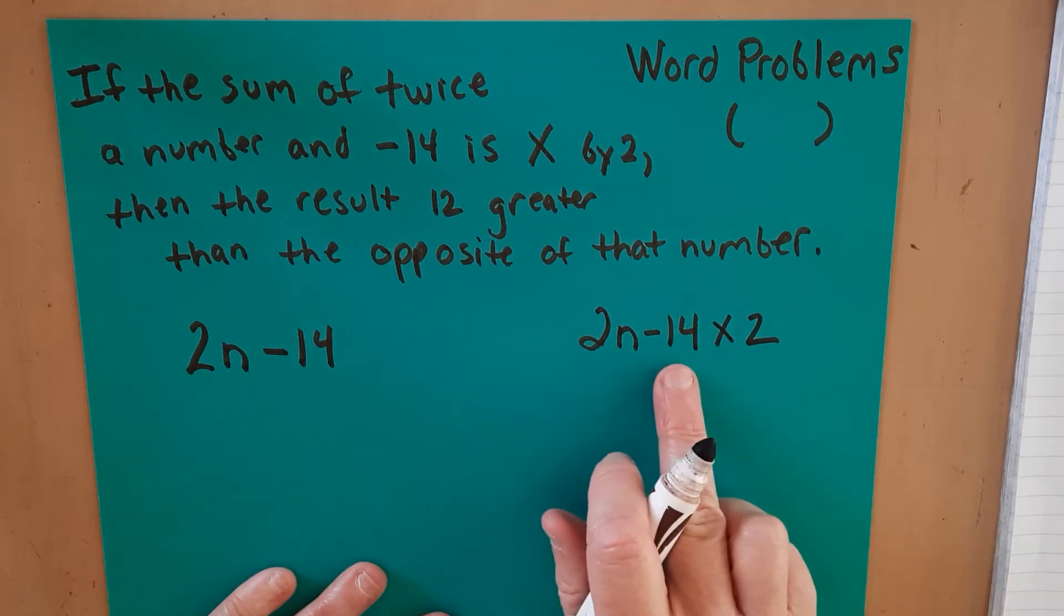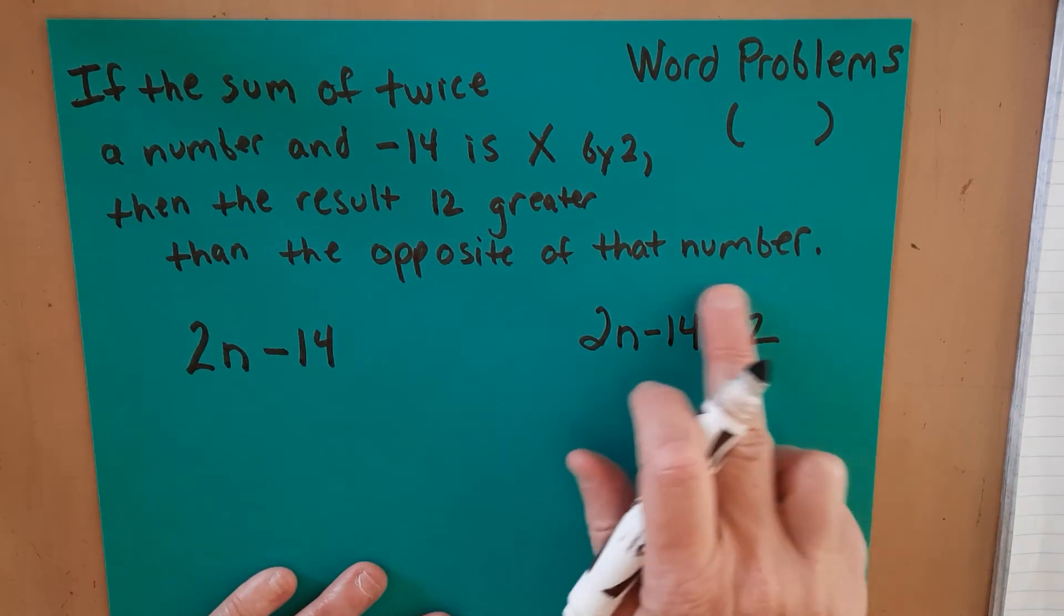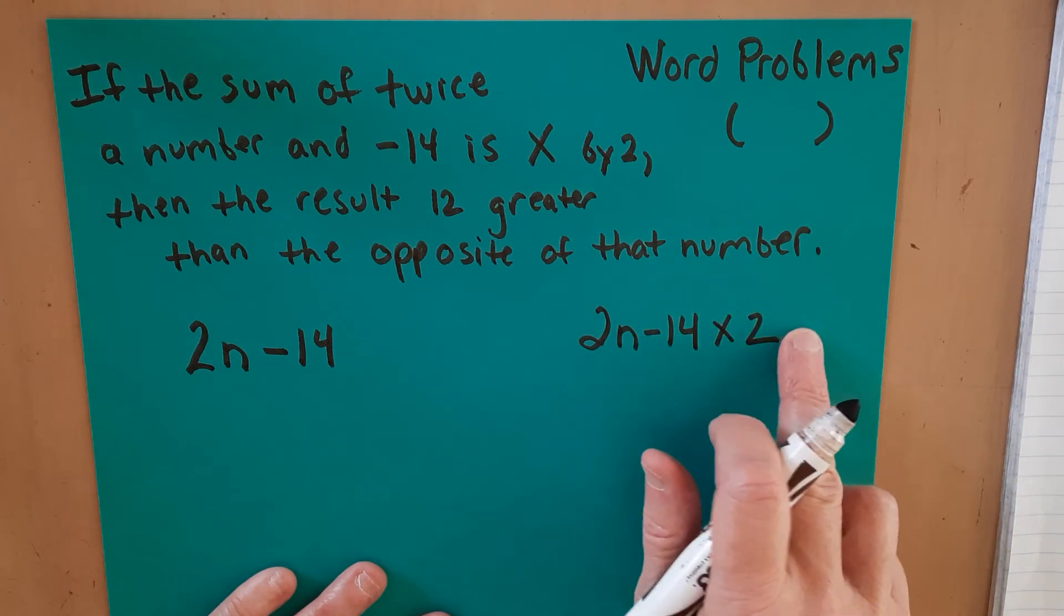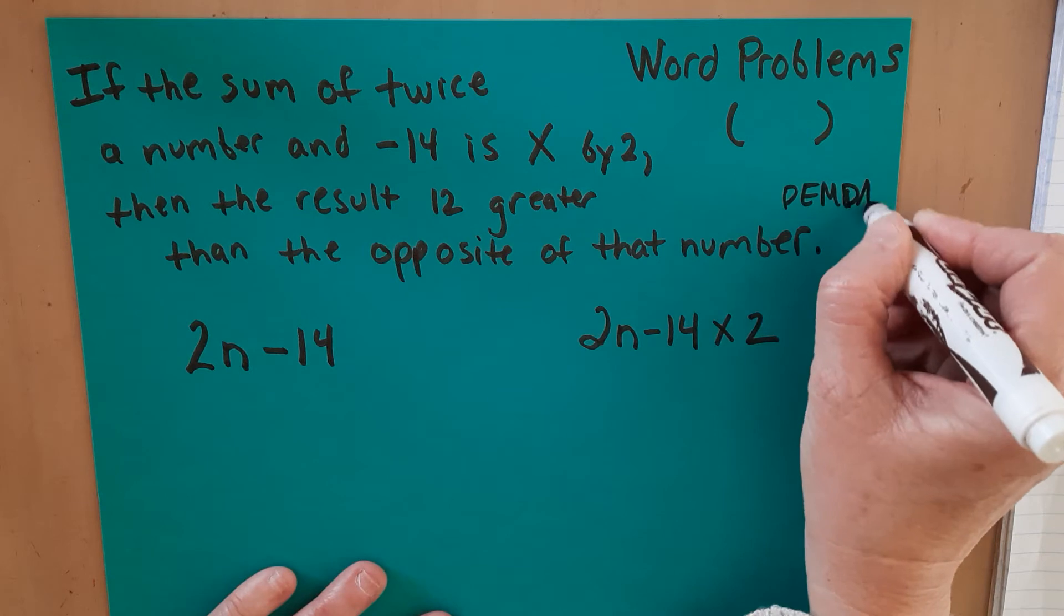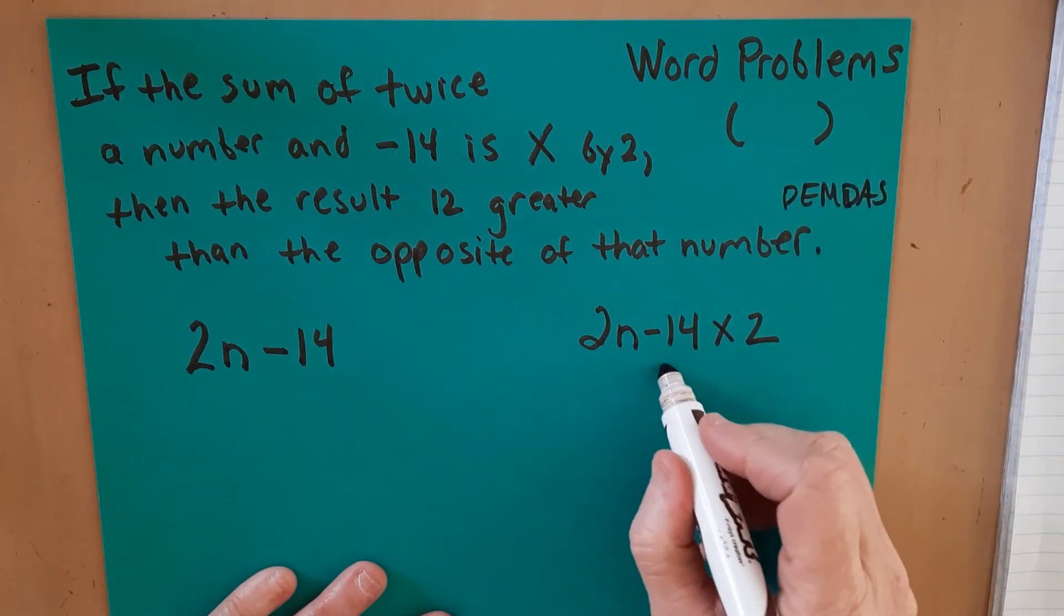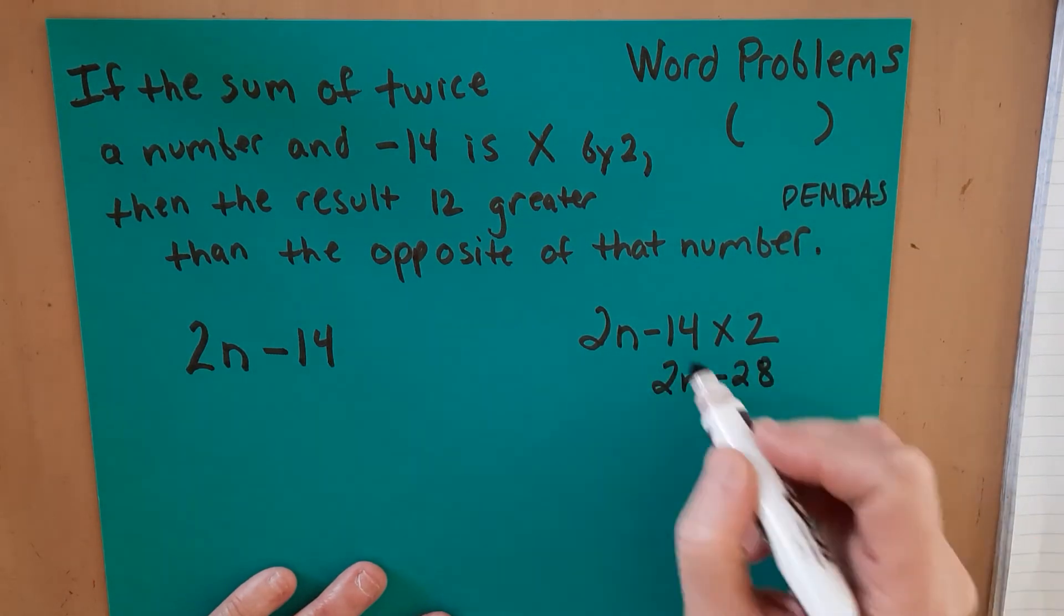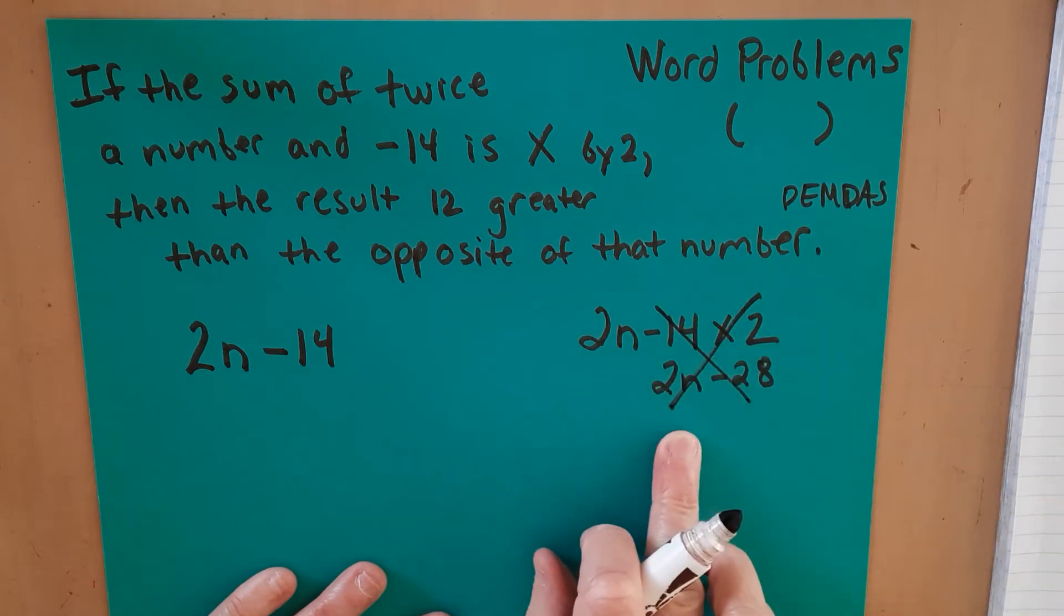Then I have some people doing this, taking and doing this multiplication first, because that's what PEMDAS tells us to do, right? To do the multiplication first. And that would give us 2n minus 28. However, that's wrong. Here's why it's wrong.